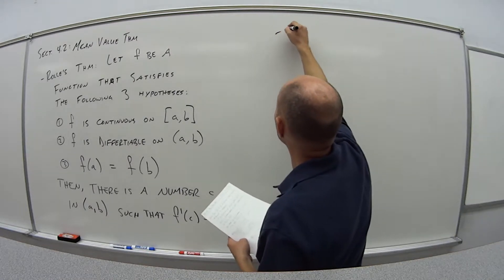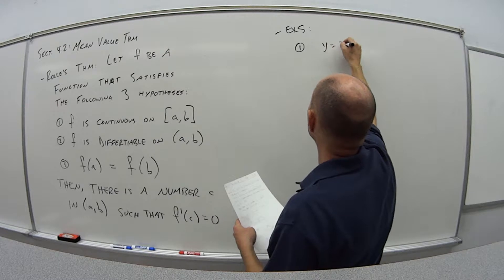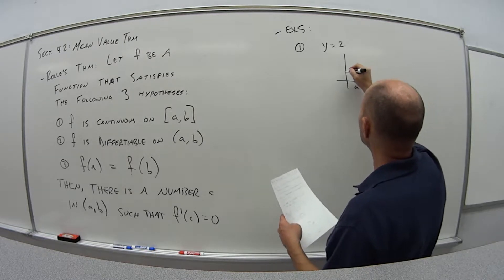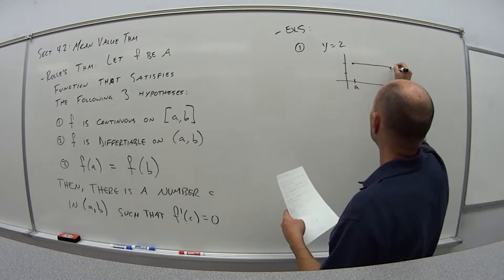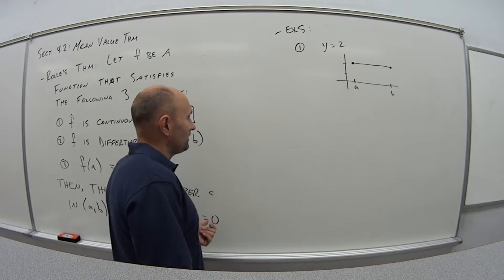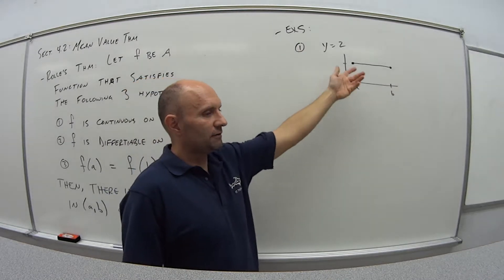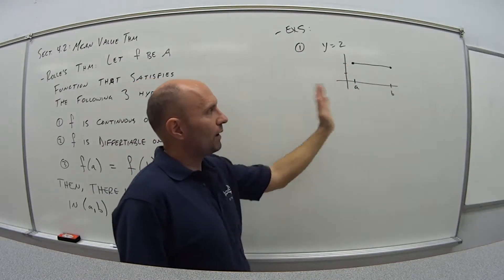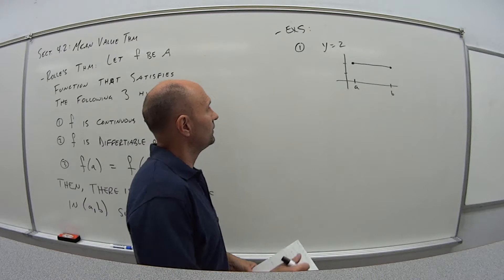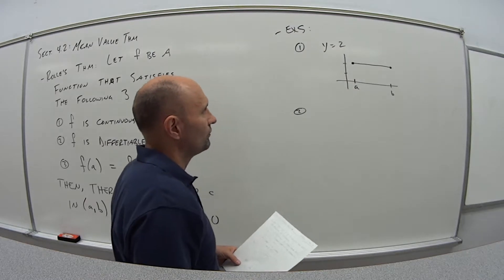Let's look at the different types of possibilities. The first one, let's say I have y equals 2. If I have a function y equals 2, it's a flat line. In this case, every number between a and b has a derivative of zero. If the function is equal to a constant, take the derivative, it's equal to zero. So every single value in that interval has the derivative equal to zero. That's the constant case.